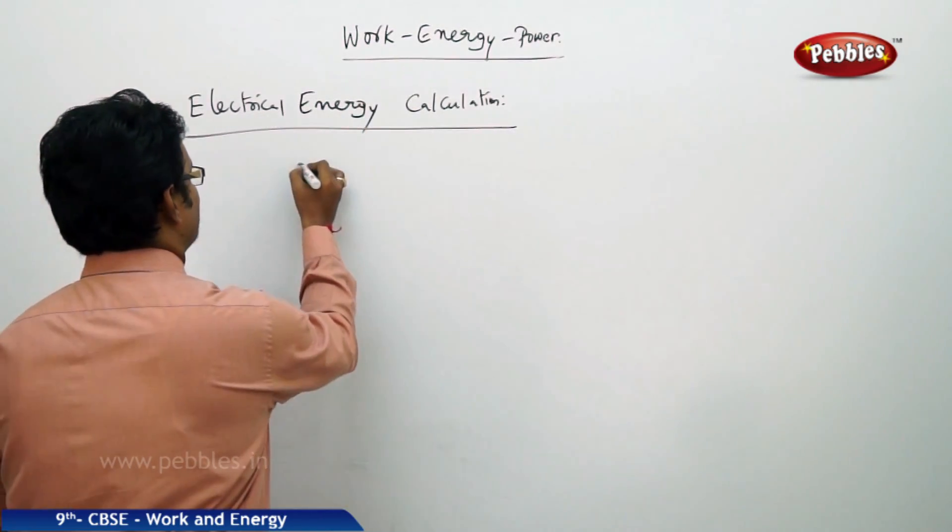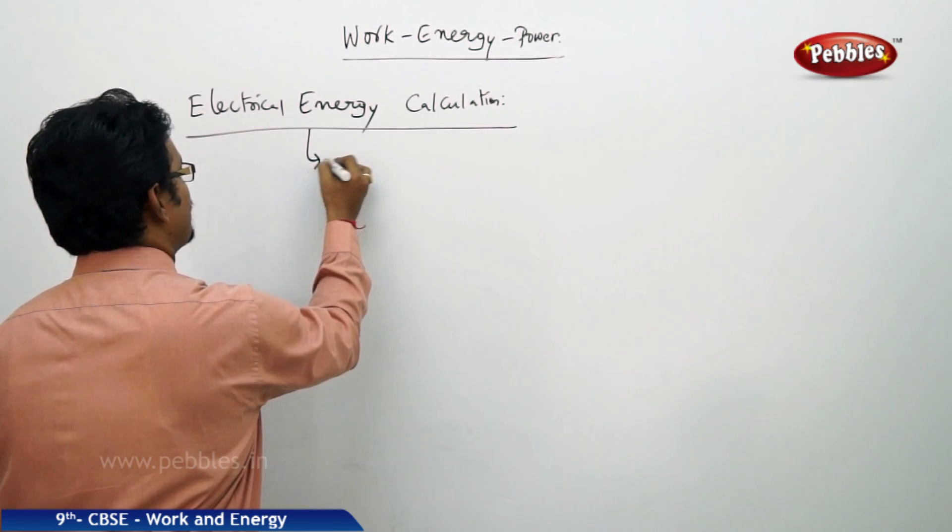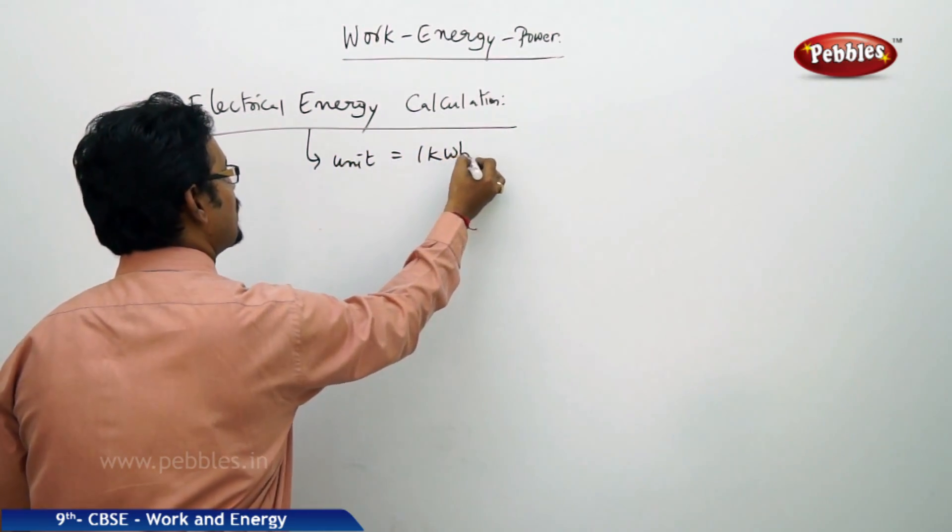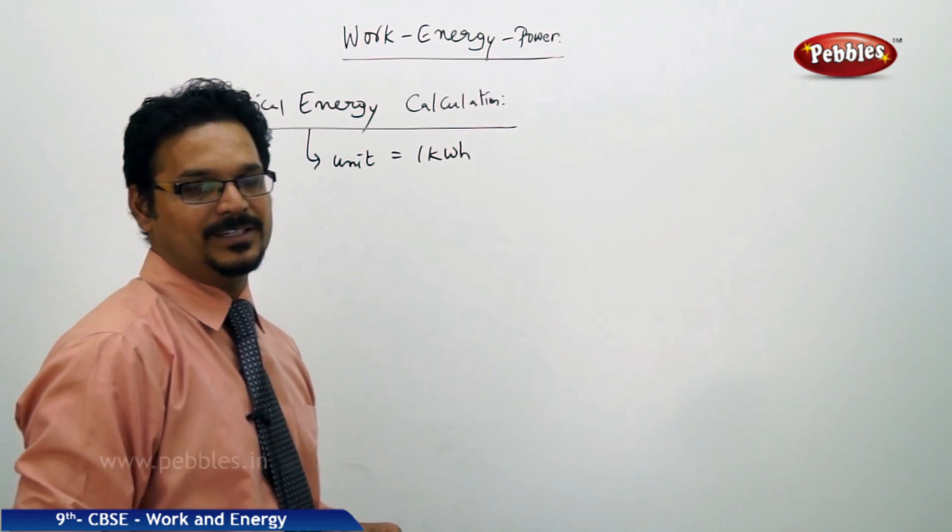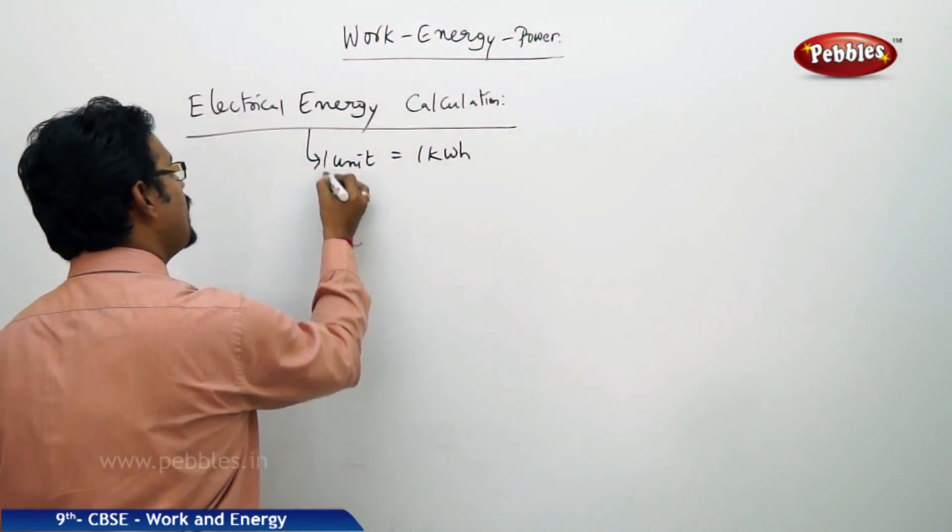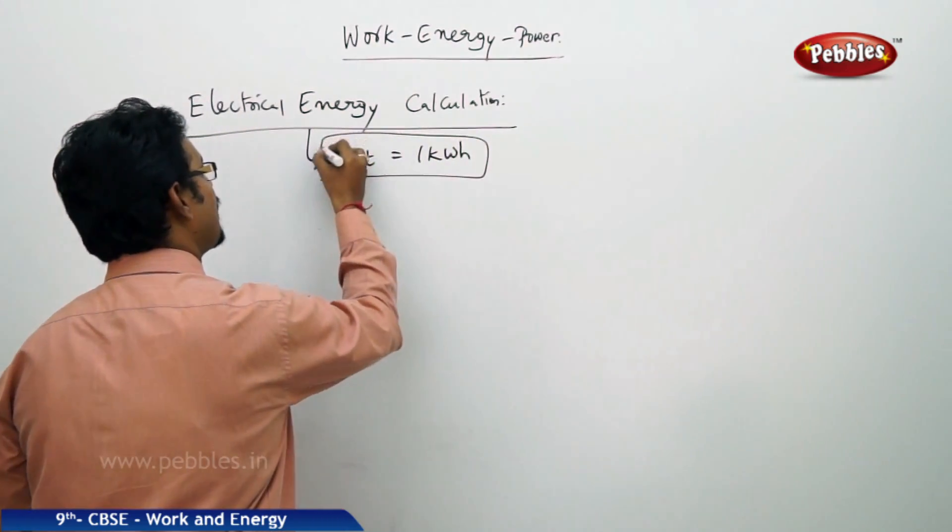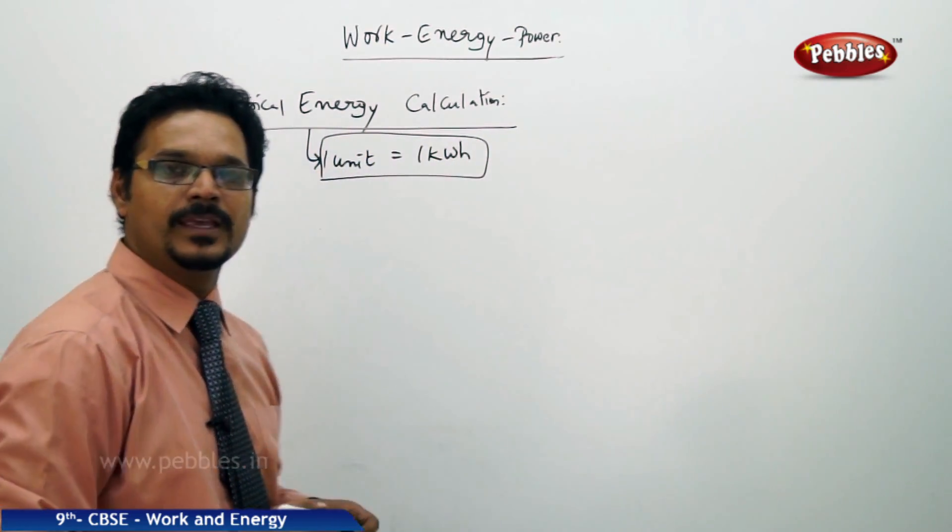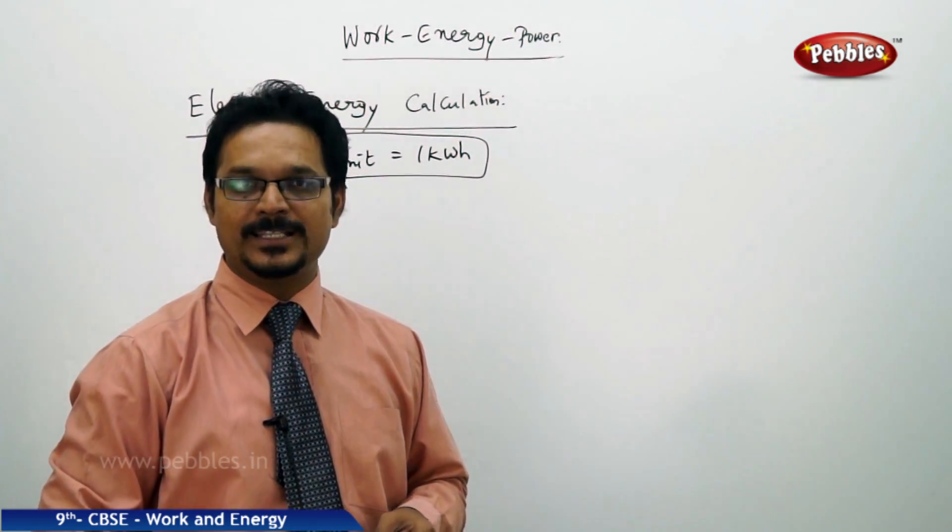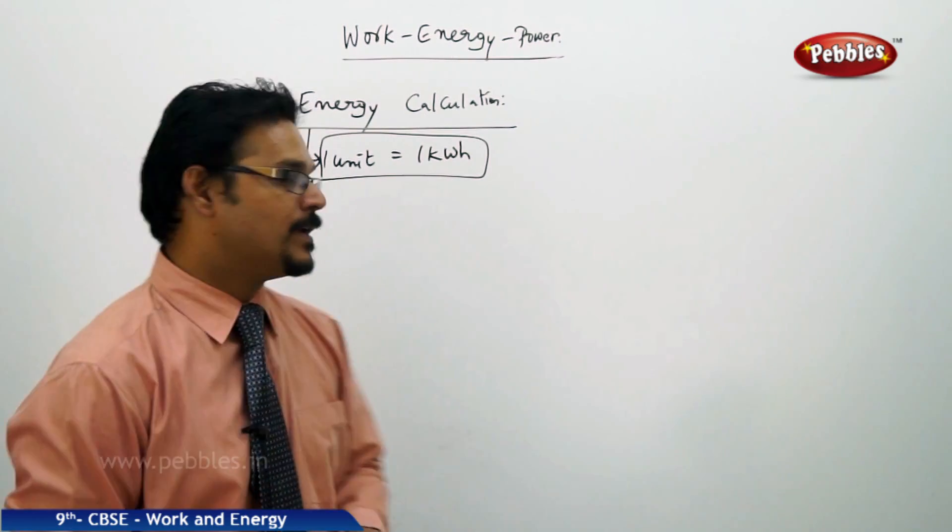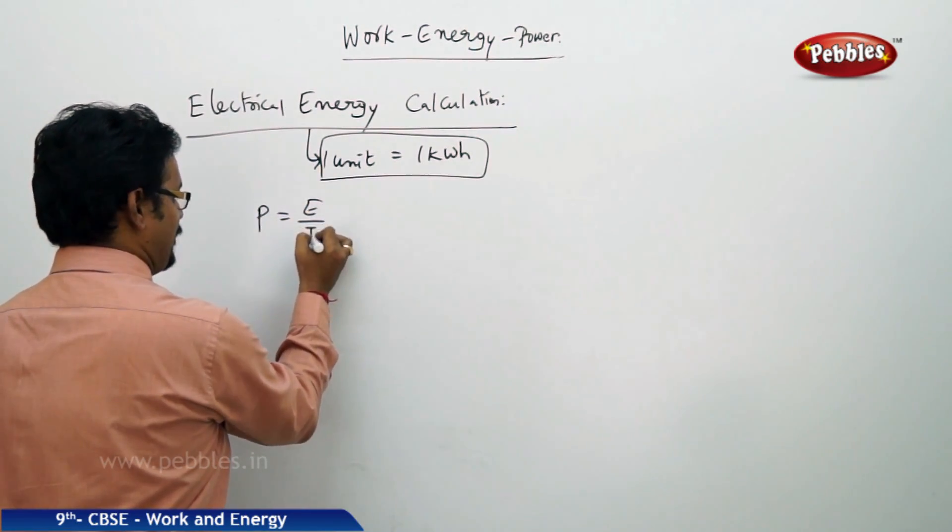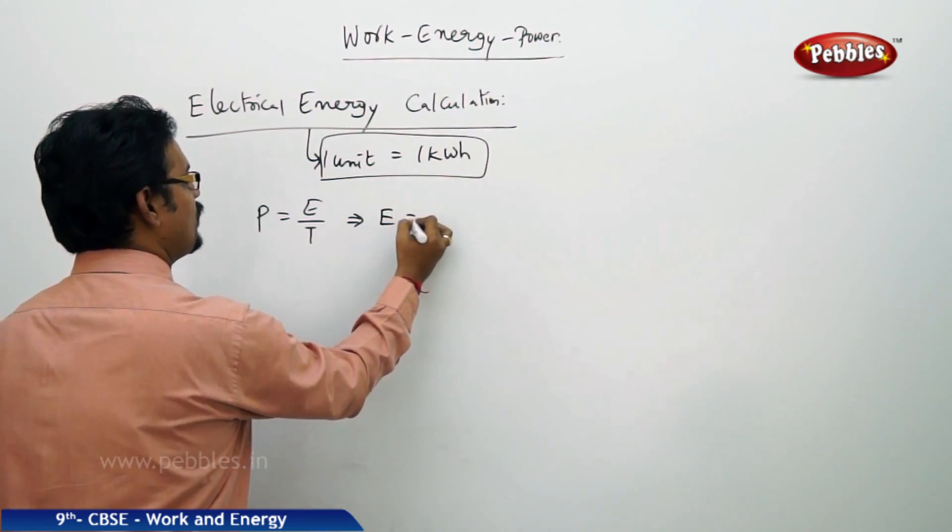Generally electrical energy unit is kWh, kilowatt hour, is a unit of electric energy consumption. Or you can say one unit equals to one kilowatt hour. If you consume 300 units for month, it is nothing but 300 kilowatt hours. So power P equal to energy by time implies energy equal to power into time.